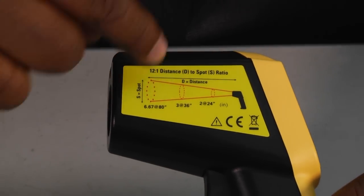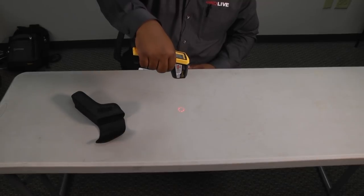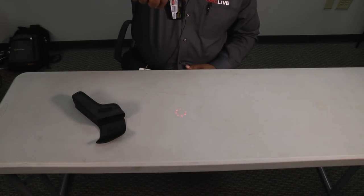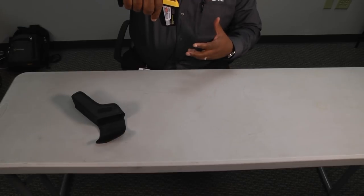at 12 feet away, it would have a one-foot diameter. So if you look down on the table, you can see how as we get closer, it gets smaller, and as we come further away, that circle gets larger. And that's where we're going to be picking up temperature from.